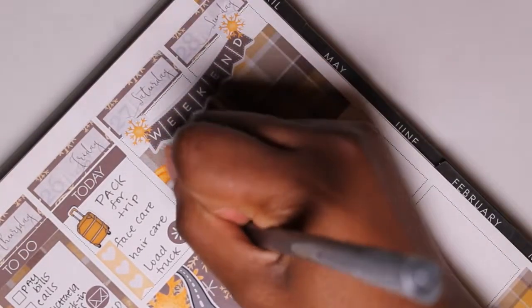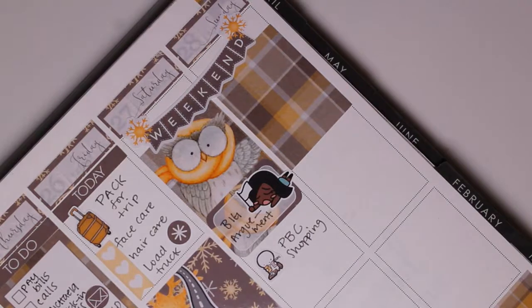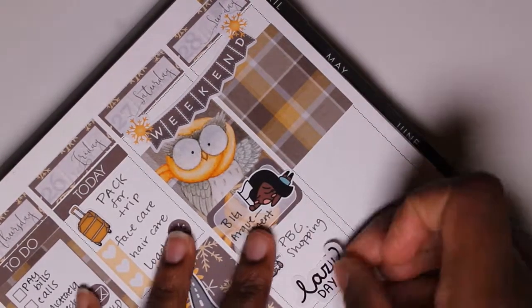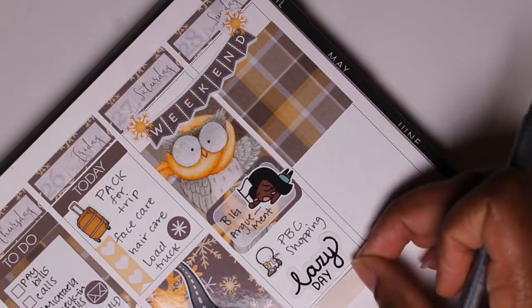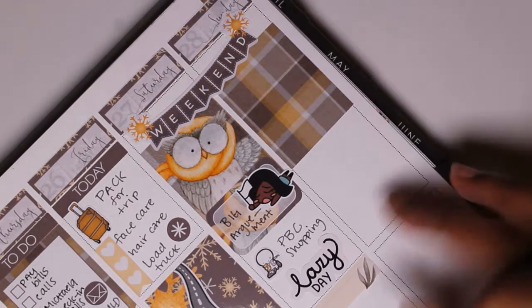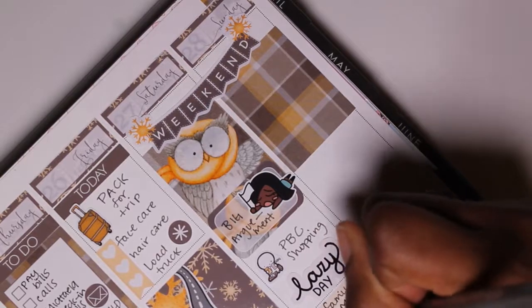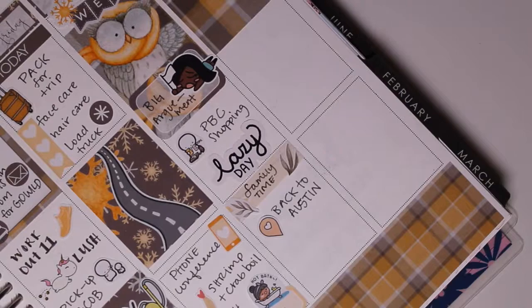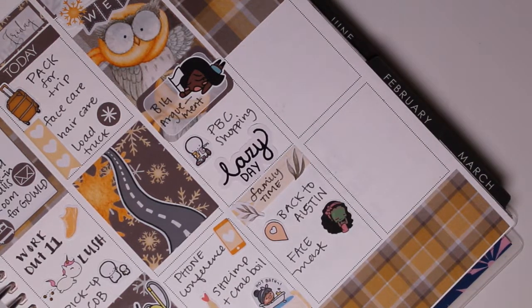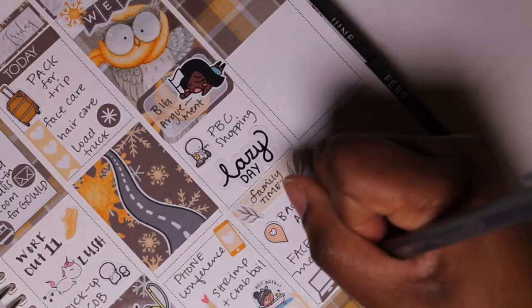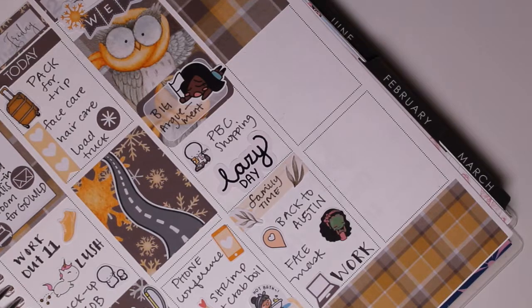Then I moved to the weekend and I really loved how I did that with the owl and the banner sticker. I also put down a sticker from Odd Loop and noted that my husband and I had a big argument. I don't usually note things like that but it was something that I wanted to remember because it kind of took up a lot of time. Then I did some PVC shopping to make myself feel better but overall it was a lazy day. And then I wrote down family time. It was a short trip. I noted that we then headed back to Austin. When I got back I did a face mask and I had tons of work to do.